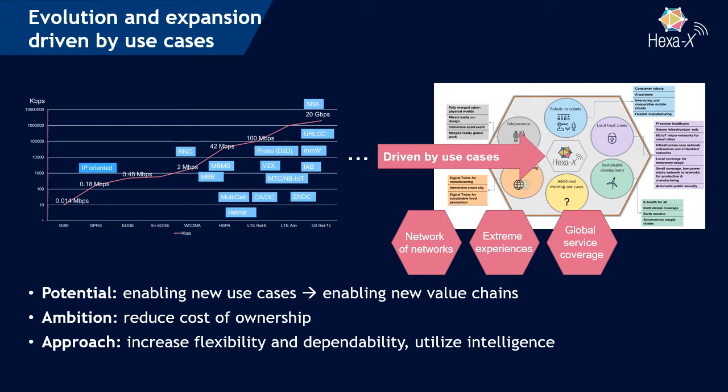You have heard about the different use cases we're targeting in HEXA-X in an earlier presentation. From the perspective of Work Packages 5 and 7, we target three core challenges: first, network of networks — integrating different types of networks into an overall 6G system; second, extreme experiences regarding dependability, latency, throughput, such as telepresence use cases; and third, global service coverage targeting sustainability use cases like Earth Monitor or autonomous supply chains.